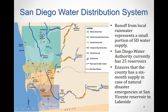The water brought from all sources gets stored in about 20 to 25 reservoirs. Some of these are Lake Hodges reservoir near Escondido, Sutherland reservoir, El Capitan reservoir, Santee reservoir, Lake Murray reservoir, Miramar reservoir, and the Upper and Lower Otay reservoirs.